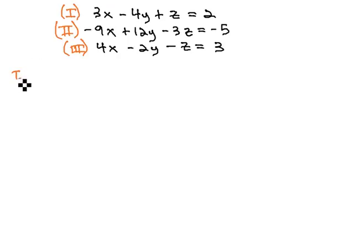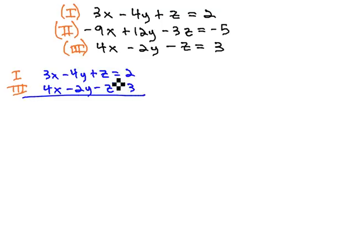So using equation 1 and equation 3, we have 3x minus 4y plus z equals 2, and 4x minus 2y minus z equals 3, and when we add them together, the z's eliminate giving us 7x minus 6y equals 5, and we have our equation a by eliminating z.